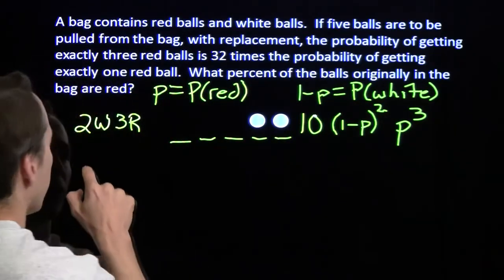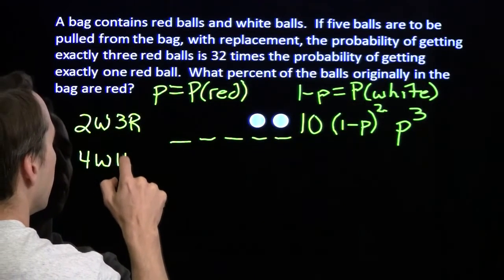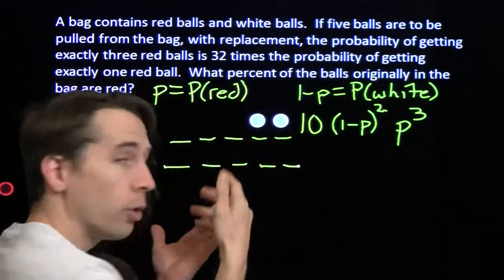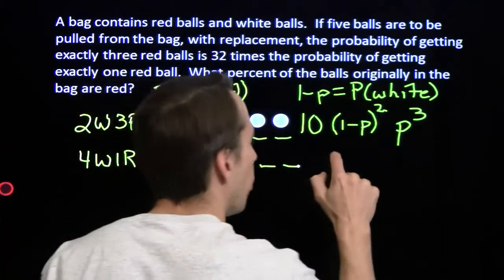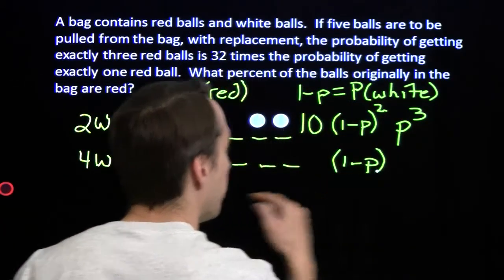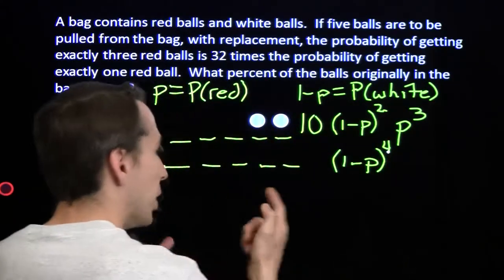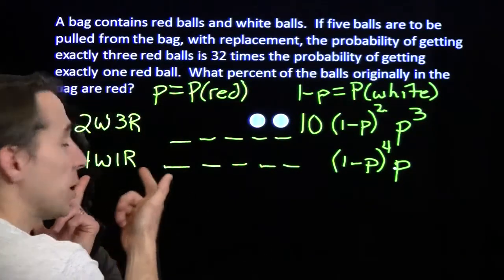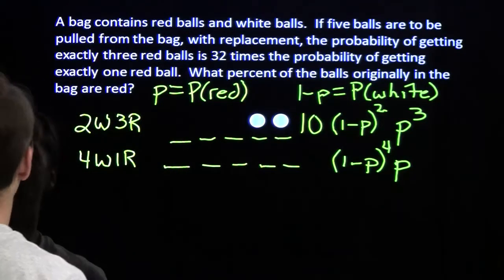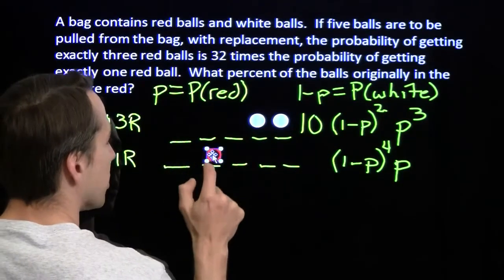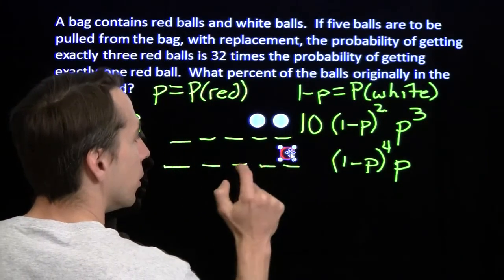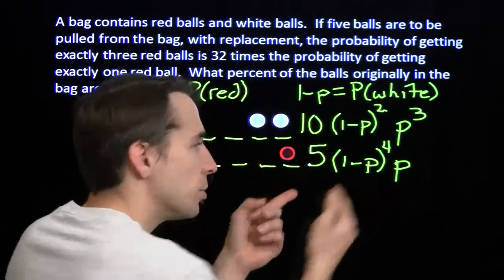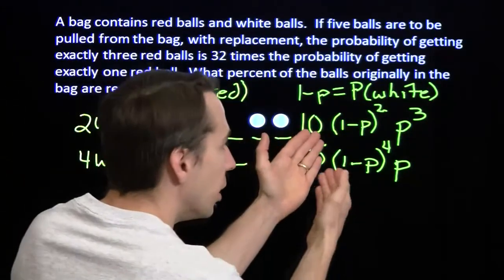Dealing with four white and one red is a little easier. Again, we have five slots — four whites and one red. For each white we get a factor of (1-P), and there are four of them. Then a single factor of P for the red ball. There are just five ways to place that one red ball, so the total probability is 5·(1-P)⁴·P.